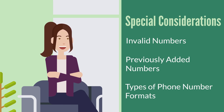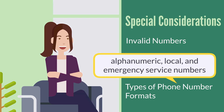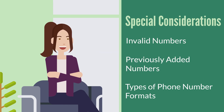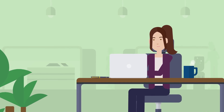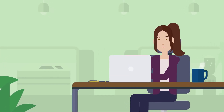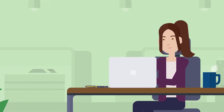So far, we've looked at national and international phone number formatting, but while these are the most common number formats in different countries, there are also other types of formats you may use from time to time. These special number formats include things like alphanumeric numbers, local numbers, and emergency service numbers. Fortunately, NetSuite supports all of these extra number formats. The NetSuite phone number formatting feature is just another way that NetSuite can simplify and streamline your business processes.